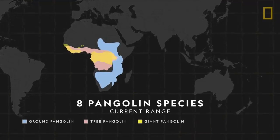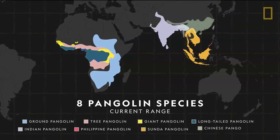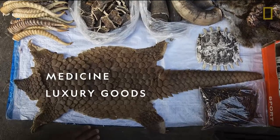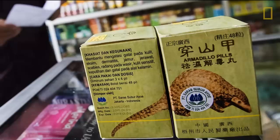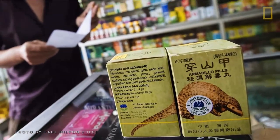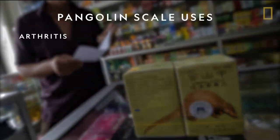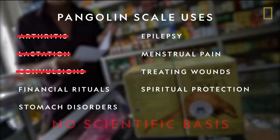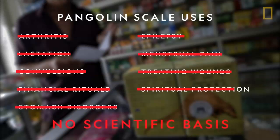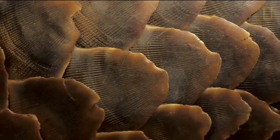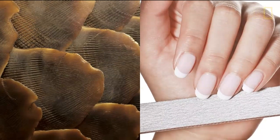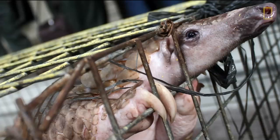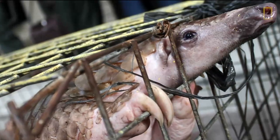All eight pangolin species, found only in tropical Asia and sub-Saharan Africa, are now at risk of extinction. Pangolins are killed for a variety of uses — from medicine to luxury goods — with the greatest demand in China and Vietnam. Pangolin scales, often powdered or made into a paste, are prescribed in traditional medicine for everything from relieving arthritis to stimulating lactation. However, these remedies have no scientific basis. Pangolin scales are made of keratin — the same material found in fingernails. Pangolin fetuses, sometimes consumed in soup, are erroneously thought to enhance virility, and only the wealthy can afford to eat pangolin, which demonstrates social status.